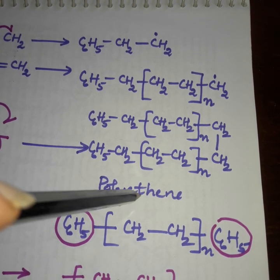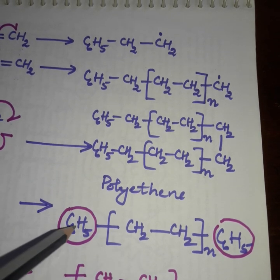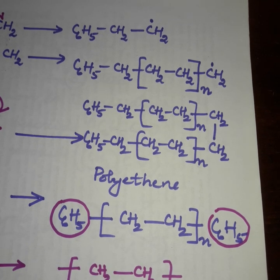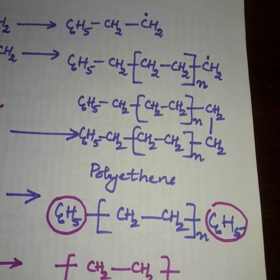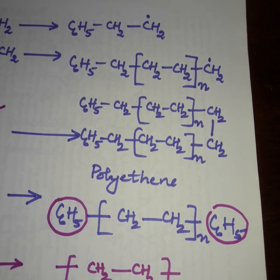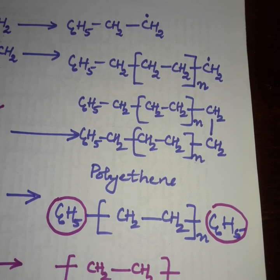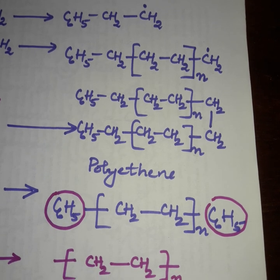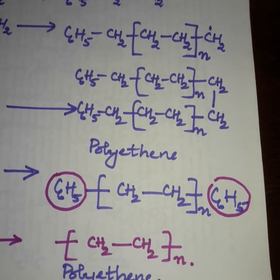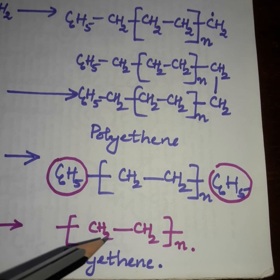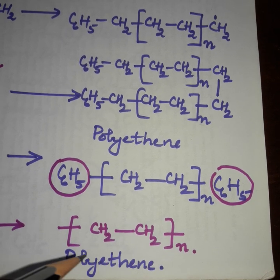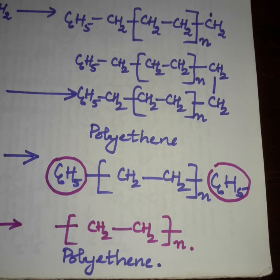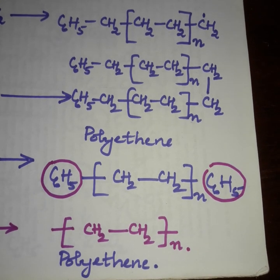The product formed is known as polyethene, which is simplified and written as C6H5-(CH2-CH2)N-C6H5. The C6H5 groups at the beginning and end do not interfere with the properties of the product, so the molecule is represented as -(CH2-CH2)N- and the product is known as polyethene. To get a better understanding, please go through the mechanism again.